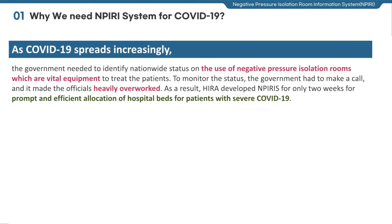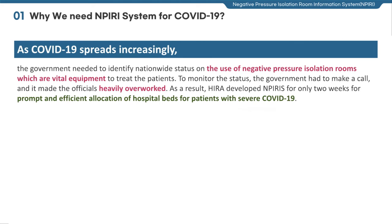I will briefly explain the background of the Negative Pressure Isolation Room Information System and the negative pressure room. The government needed to identify the nationwide status on the use of negative pressure isolation rooms, which are vital equipment to treat patients. To monitor the status, the government had to make calls, which made officials heavily overworked. As a result, HIDA developed NPIRIS in only two weeks to allocate hospital beds for patients with severe COVID-19 promptly and efficiently.